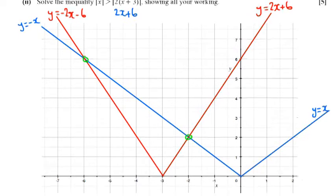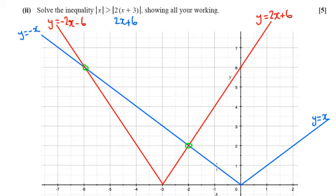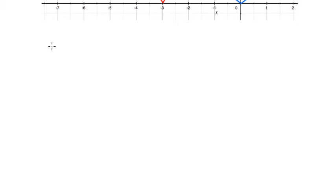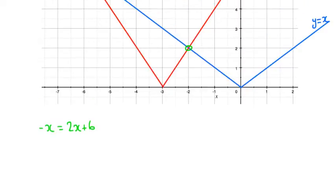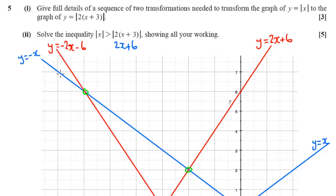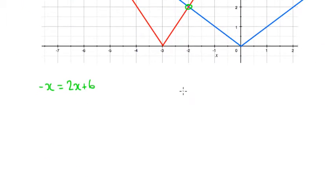That's happening when this minus x line meets the positive 2x plus 6 line. So that's one equation we're going to solve. And the other equation that we need to solve is when minus x meets minus 2x minus 6.